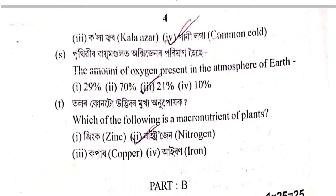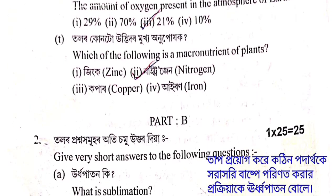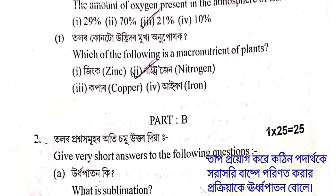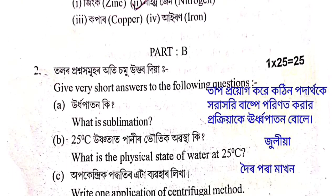Next question: Prithibir bayumondolot oxygen-or porimana hoase? The amount of oxygen present in the atmosphere of Earth is: 29%, 70%, 21%, or 10%? The correct answer is option 3 — 21%. Next: Which of the following is a macronutrient of plants? Options: zinc, nitrogen, copper, iron. The correct answer is option 2 — nitrogen.